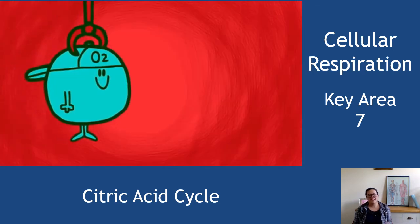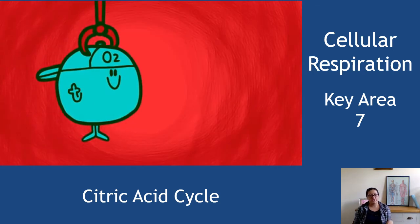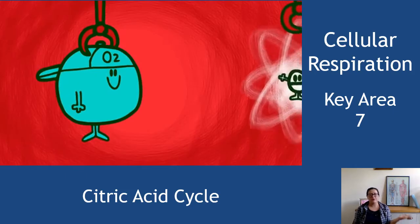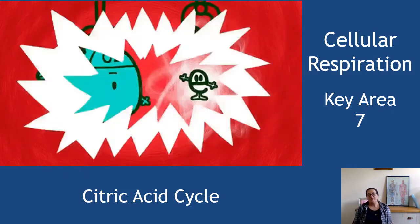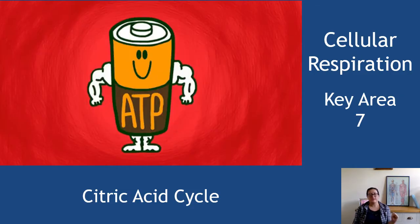Hi there. This is section two of cellular respiration, which is key area seven of unit one of higher human biology. We're going to be covering the citric acid cycle, or as I like to call it, the wheel of evil.